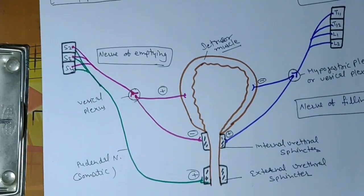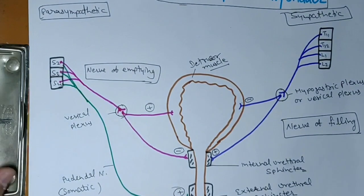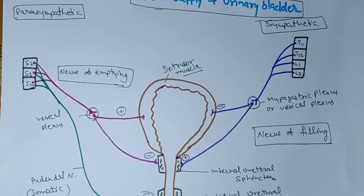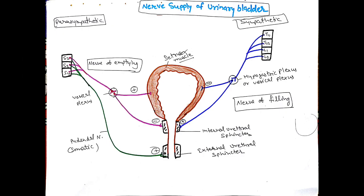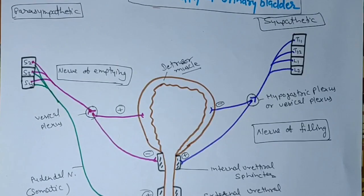So these are the supplies: sympathetic, parasympathetic, and somatic. The nerve of filling is sympathetic, and the nerve of emptying is parasympathetic. Thank you very much, thanks for watching.